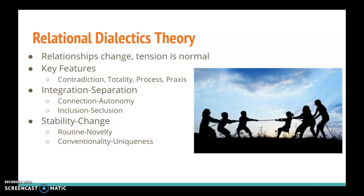Finally, the last major category of tension that we might experience is expression-non-expression. Internally, within the couple, we might experience this as openness-closedness. This describes the tension between wanting to share everything with our partner and wanting to be an open book, but also wanting to have those secrets — those little things that only you know about yourself. So there's a tension between wanting to express yourself and wanting to not express yourself within that relationship.